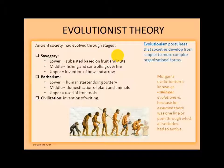Civilization finally came about with the invention of writing. Morgan's brand of evolutionism is known as unilinear evolutionism because he assumes that there was only one line or path through which our society had to evolve.